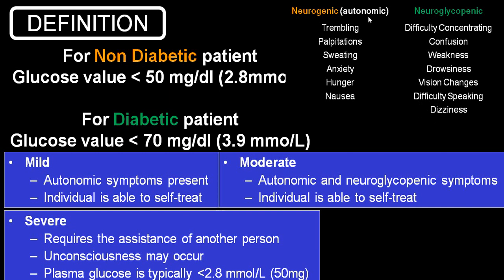Depending upon the symptoms of autonomic and neuroglycopenic groups, hypoglycemia is divided into mild, moderate, and severe. Mild: autonomic symptoms are present and the person is able to self-treat. Moderate: has both autonomic and neuroglycopenic symptoms, and the individual is still able to self-treat. Severe: due to altered level of consciousness, the person requires assistance of another person, and blood sugar level is less than 50.